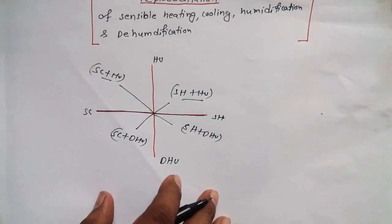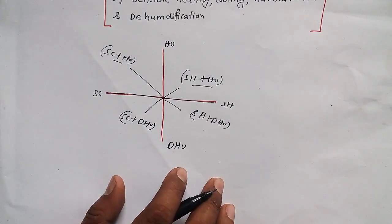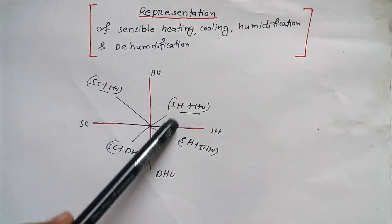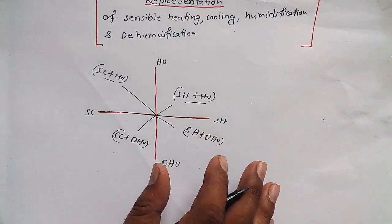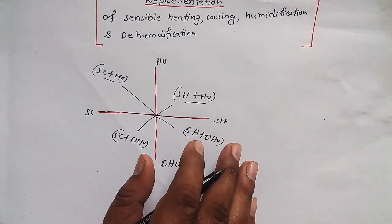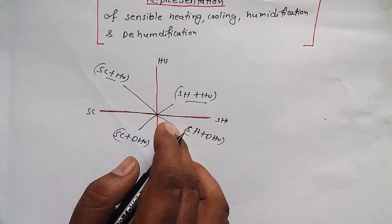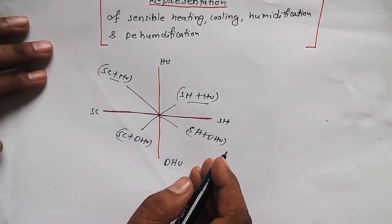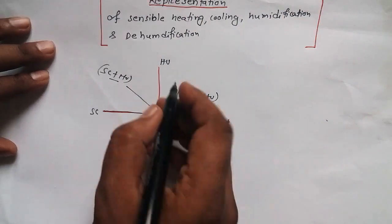So this is how you can represent all these important parameters on this psychometric chart. Now if I will represent this on exactly the psychometric chart, so what I have to do? How I can do it?